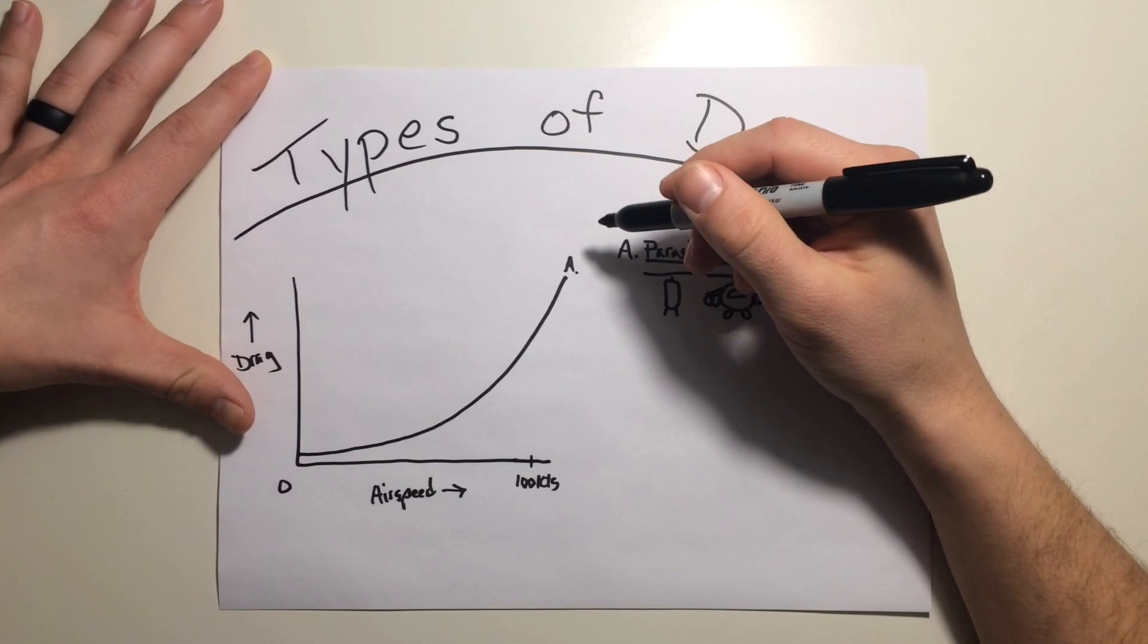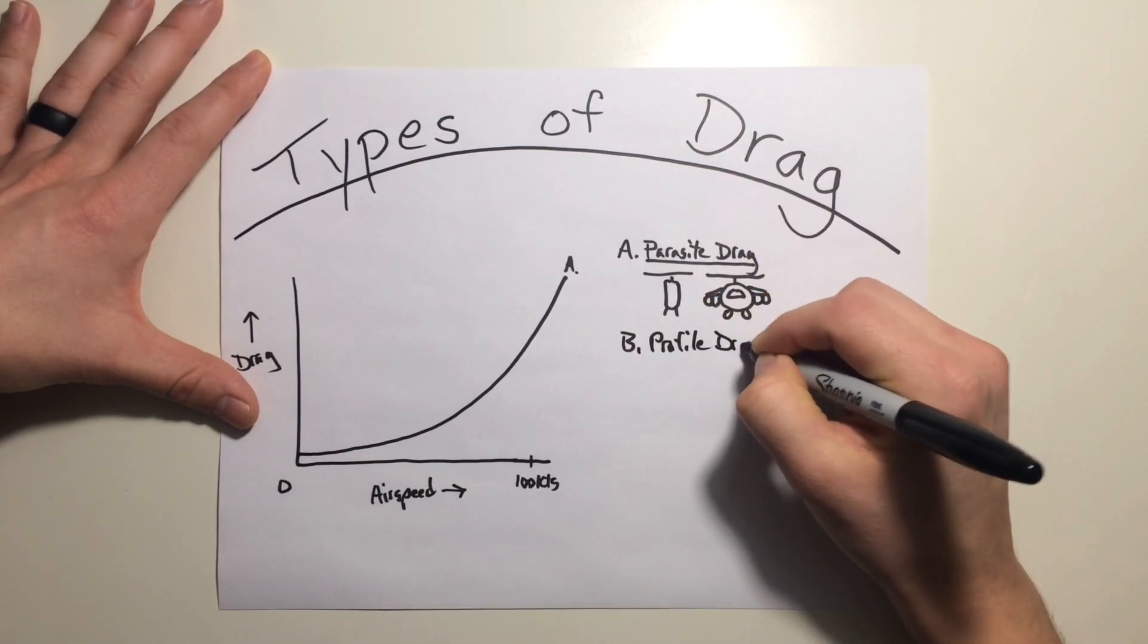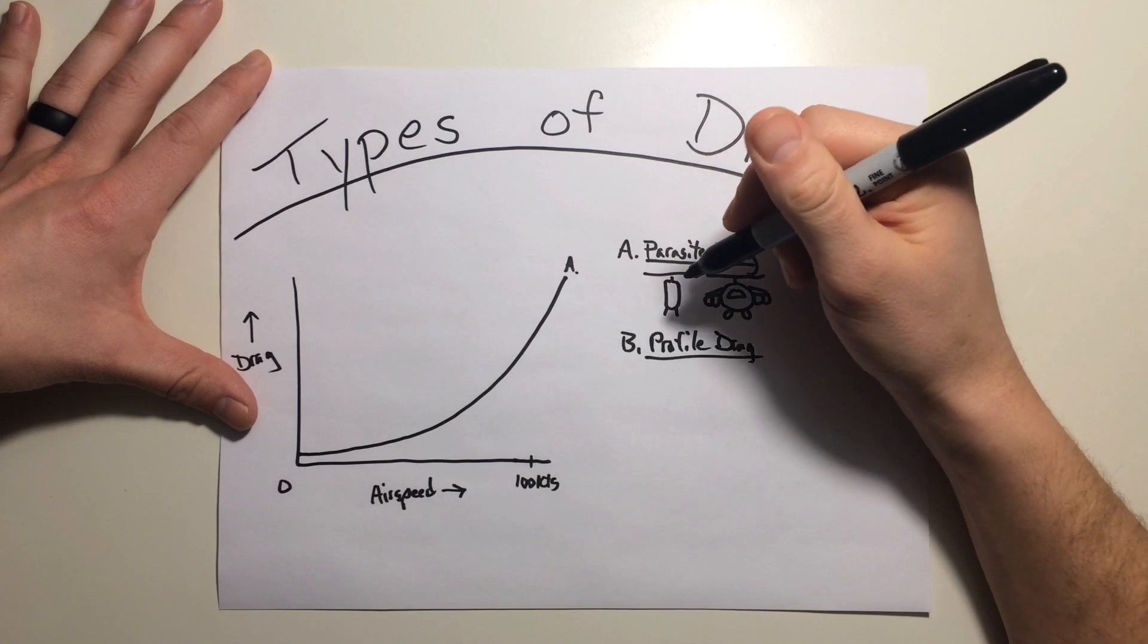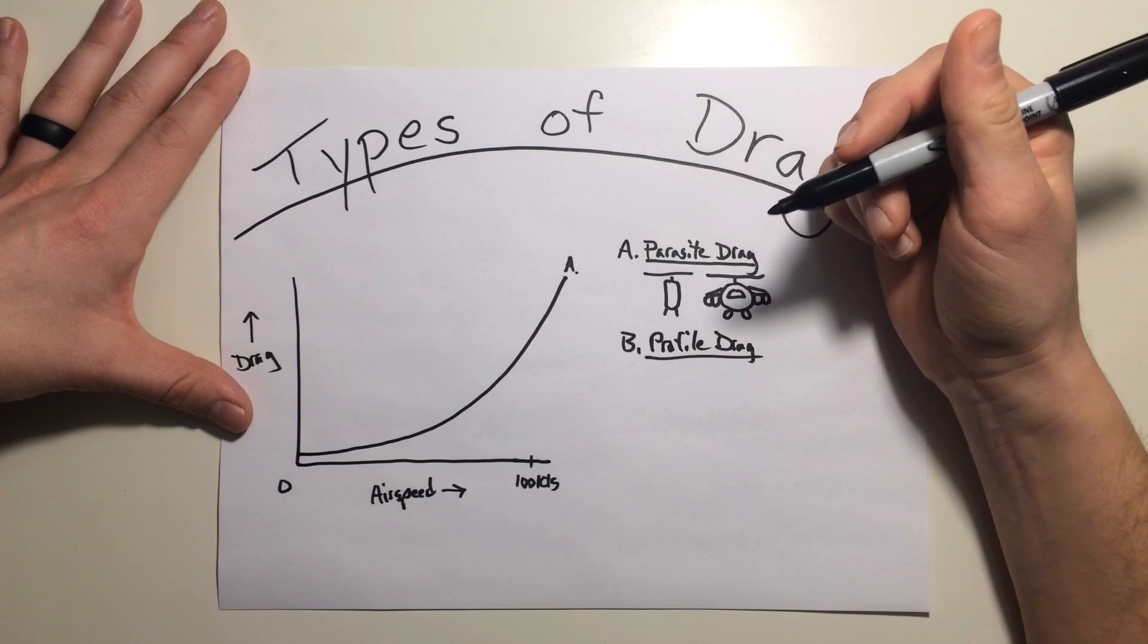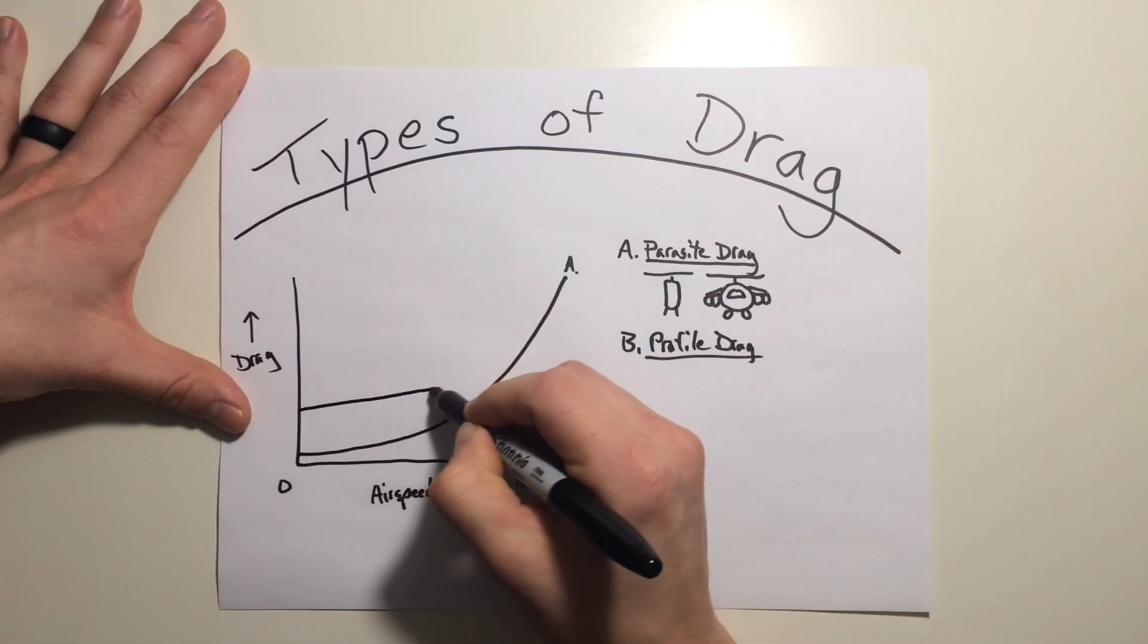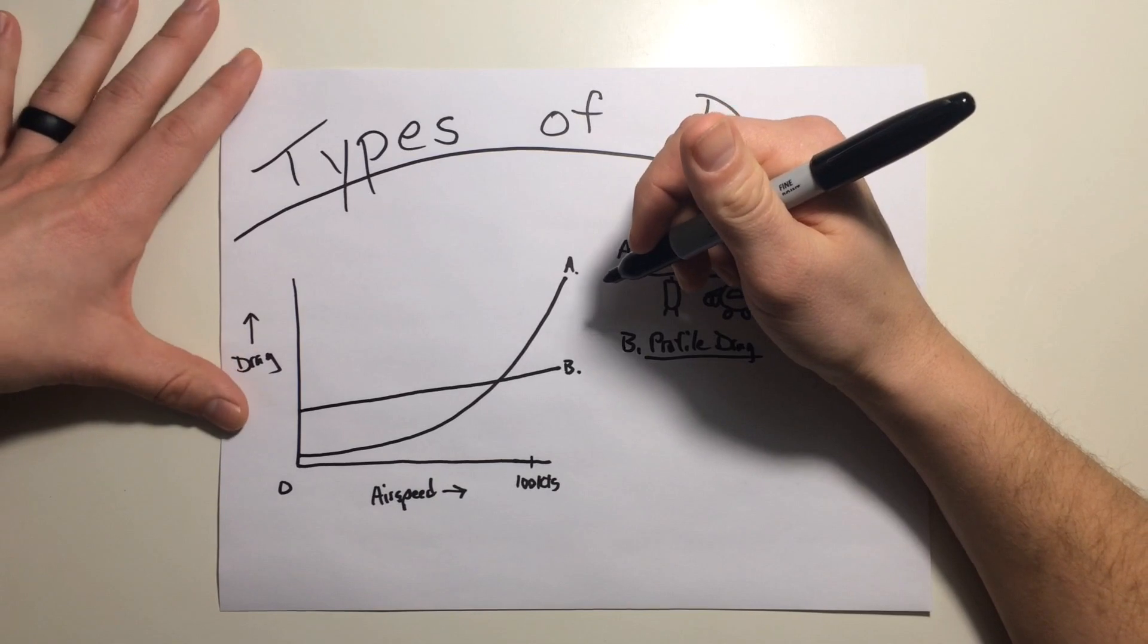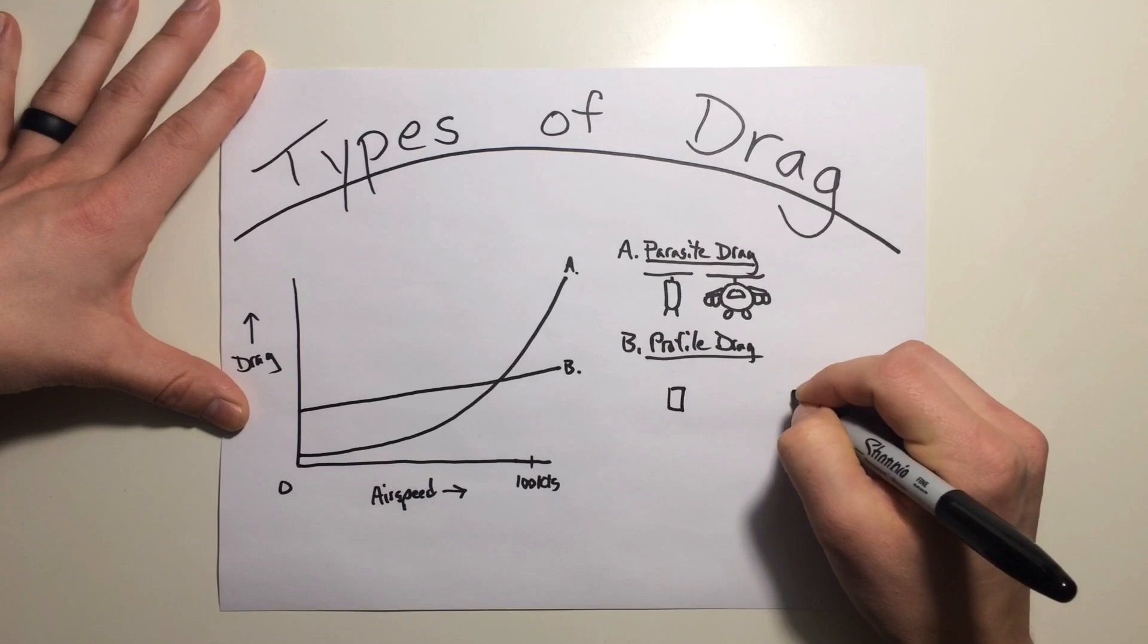The next type of drag is profile drag. Now profile drag specifically deals with the drag caused by the frictional resistance of the blades as they travel through the air. This is going to start out low and have a moderate increase as you accelerate faster. Imagine the difference between an airfoil shaped like a block versus a streamlined airfoil. This is the easiest way to picture this.